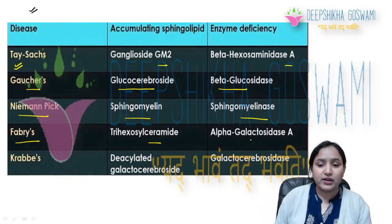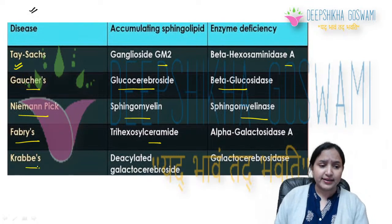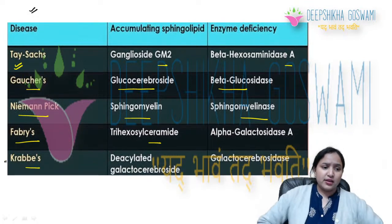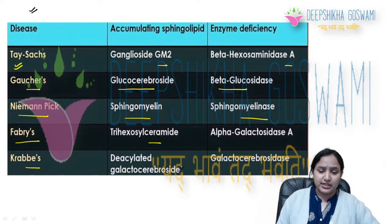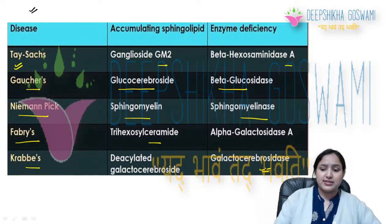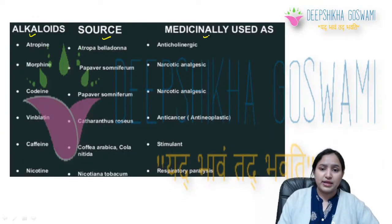Fabry's disease: enzyme deficiency is alpha-galactosidase A, accumulating sphingolipid is trihexosylceramide. Then there is Krabbe's disease: accumulating sphingolipid is galactocerebroside, enzyme deficiency is galactosidase. Next, let's talk about alkaloids — their sources and medicinal uses.